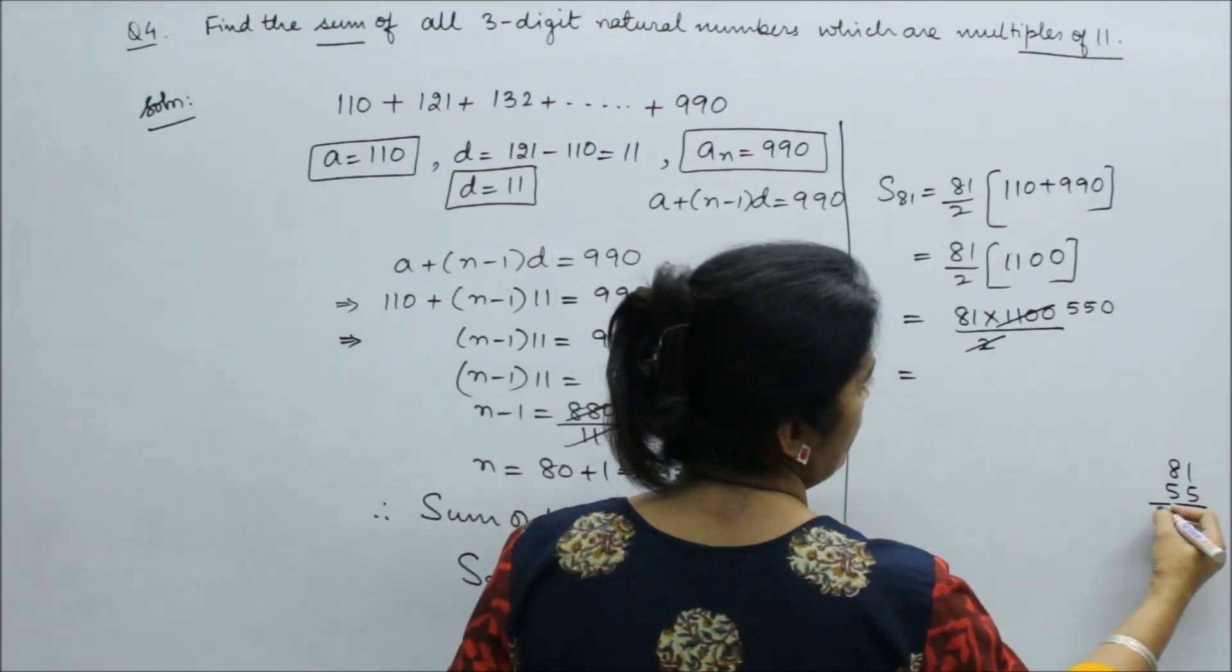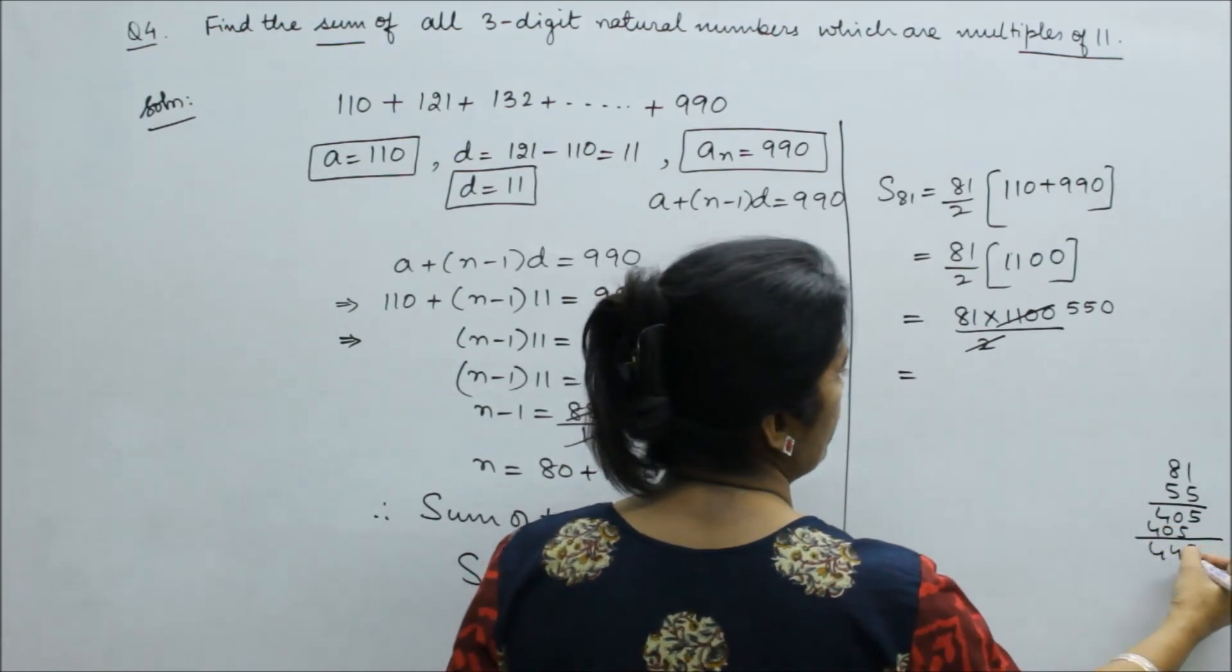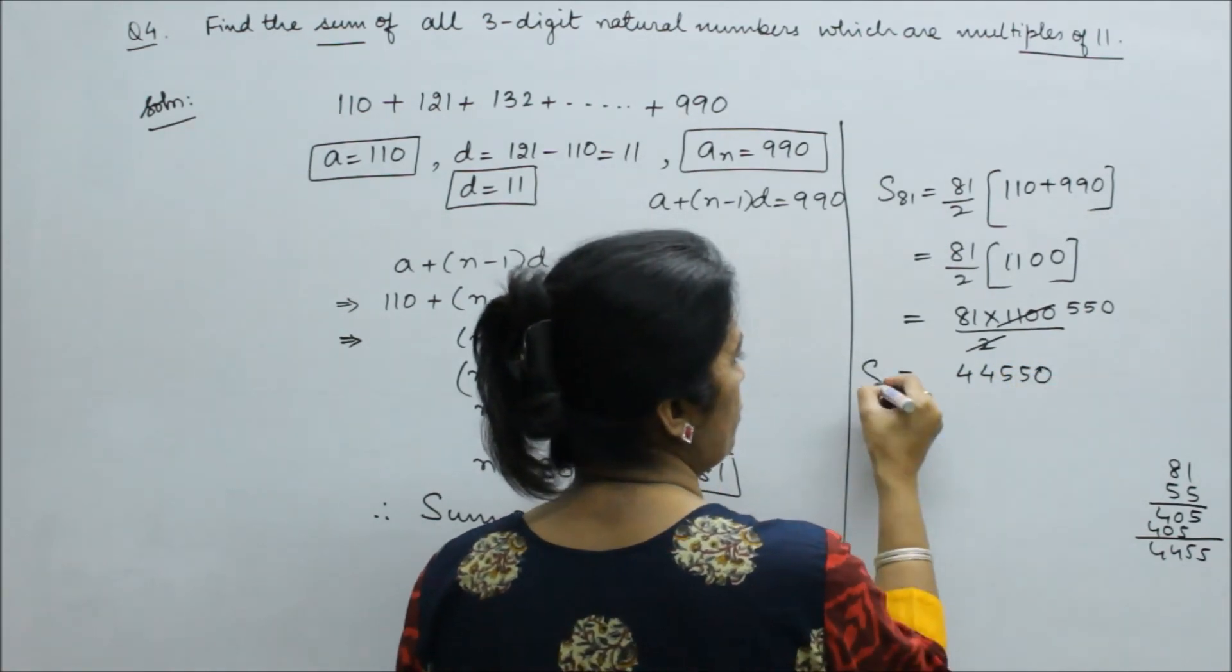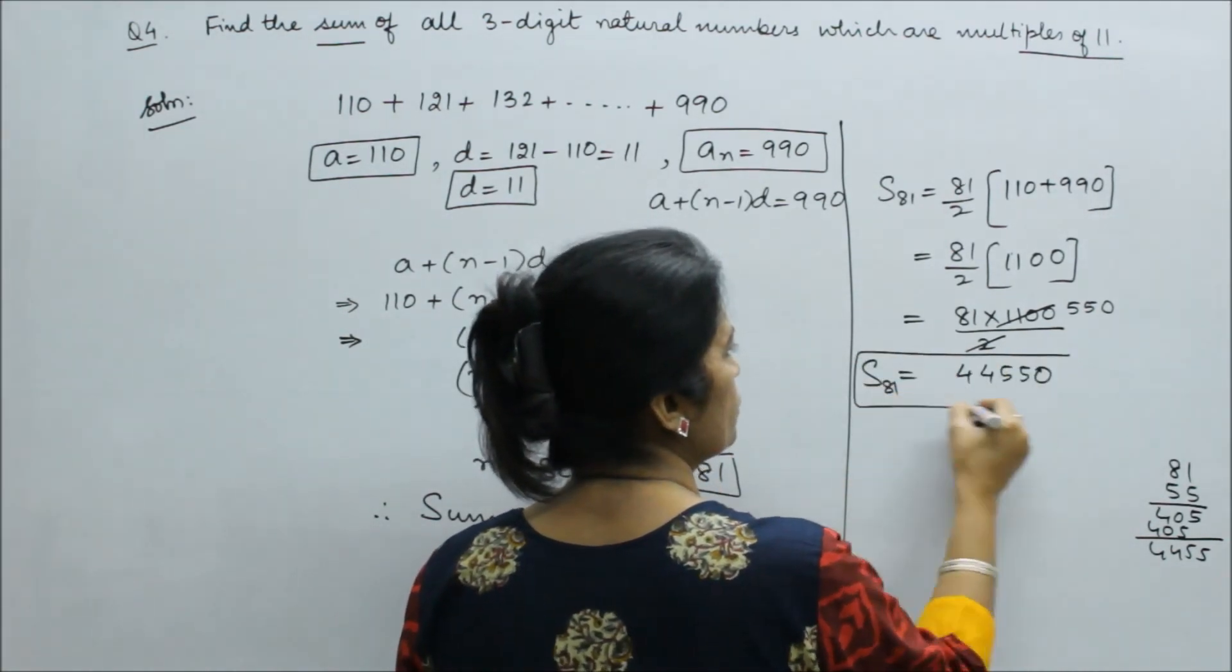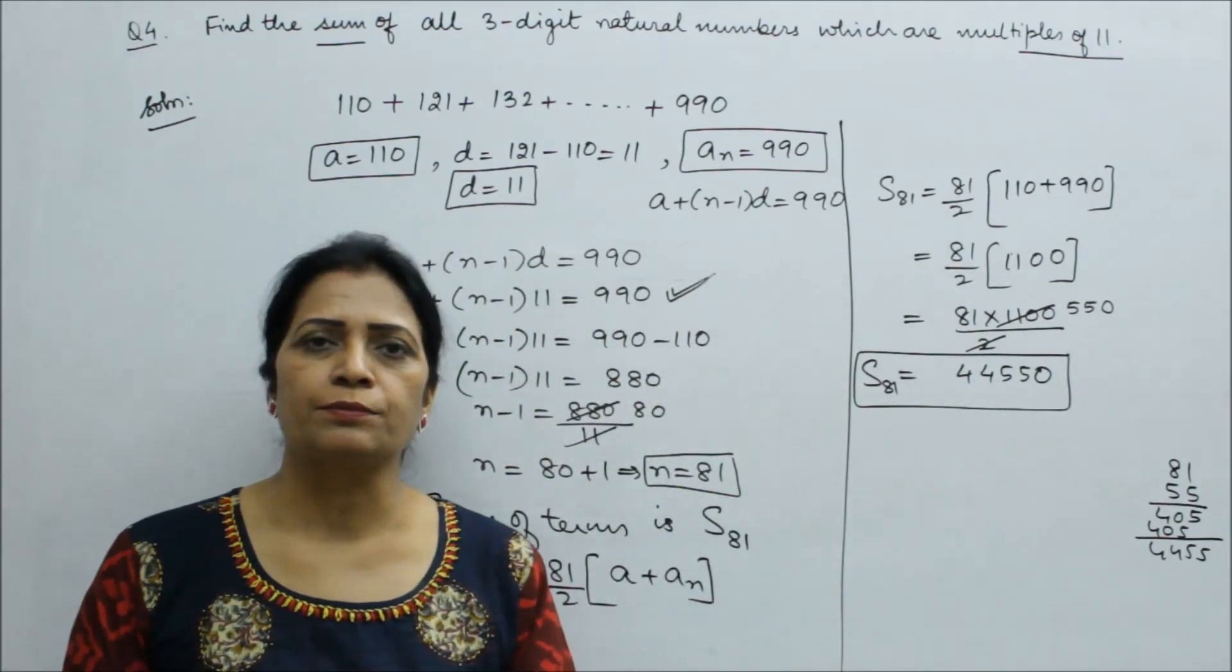Multiply it. So you can see 44550. So this is the sum. So this is the answer. Quite an easy question, just take care of the steps.